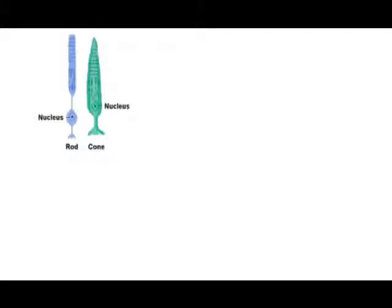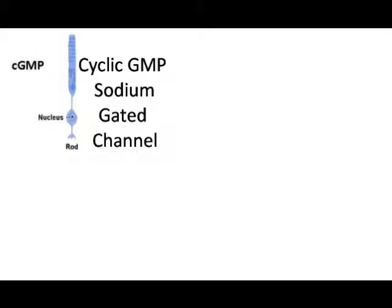If we take a look at an example of a rod in the dark, there would be cyclic GMP floating around with cyclic GMP-gated sodium channels amongst the membrane of the rod. Similar to sodium-potassium pumps of a given cell, the cyclic GMP will stimulate the cyclic GMP-gated channels, which in turn will allow sodium ions to enter the rod.